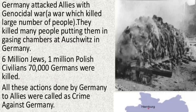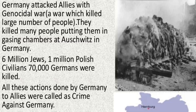Germany had started the Second World War against the Alliance, along with a genocide war — a war which killed a large number of people from particular communities. They put people into gassing chambers and used different methods to kill people, including electrified wire and gas chambers. They killed crores of people in Germany during the Second World War.